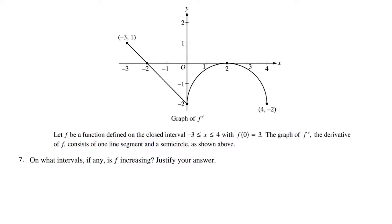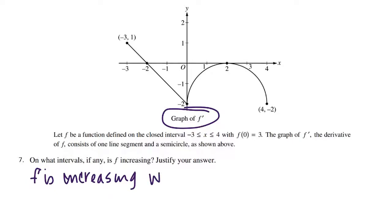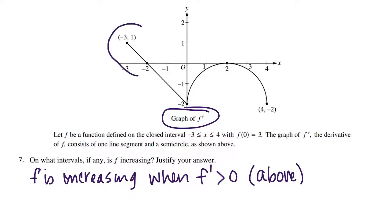For number 7, on what intervals would my function f be increasing? Always take note that you're looking at the derivative graph. We need to justify: f is increasing when f prime at x is positive, or greater than 0. Graphically, that means f prime is above the x-axis. Looking at our graph, f prime is above the x-axis right through here. So the interval of increasing would be from negative 3 to negative 2, open interval.